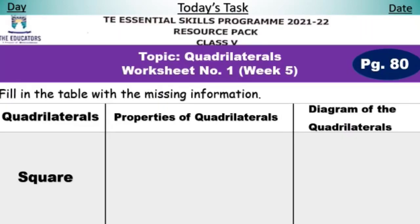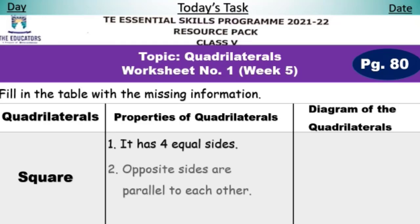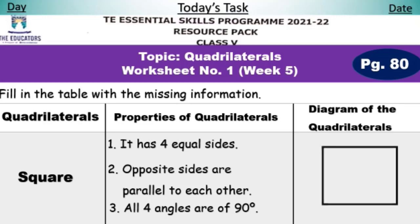Let's start our today's task. Dear students, open resource pack page number 80, topic quadrilaterals, worksheet number 1, week 5 — fill in the table with the missing information. I have explained all the quadrilaterals on page number 58, so by keeping those points in mind, let's fill this page. Quadrilateral: square. Properties: it has four equal sides, opposite sides are parallel to each other, and all four angles are of 90 degrees. Here is the diagram of the quadrilateral.